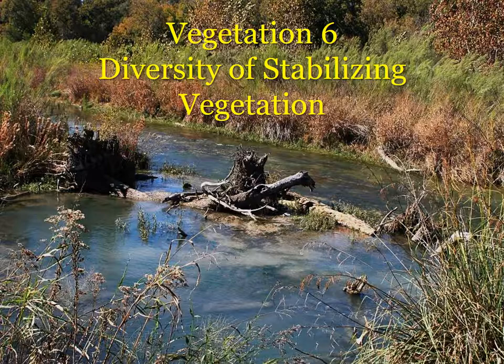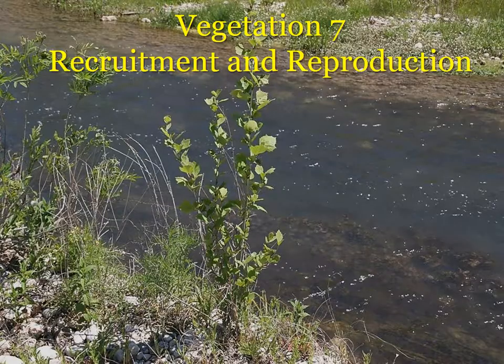Beginning the vegetation part of the checklist, item number six has to do with the diversity of stabilizing vegetation. Here we're looking for the minimal amount of diversity needed for recovery and maintenance of the riparian area — not maximum pristine diversity, but enough to begin to recover or maintain conditions. We're usually looking at two or three species of grasses and sedges and two or three species of shrubs as that minimal criteria.